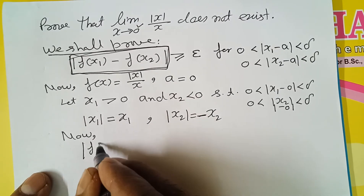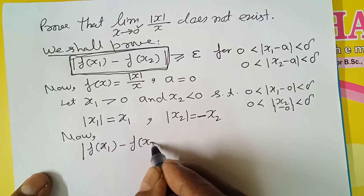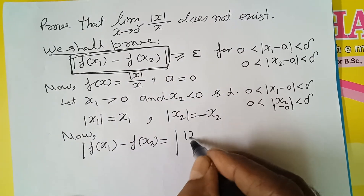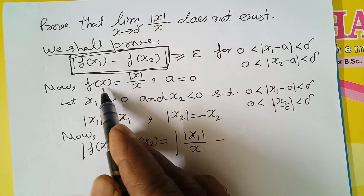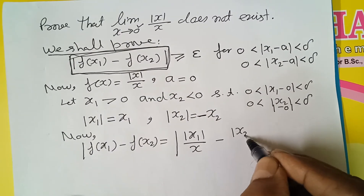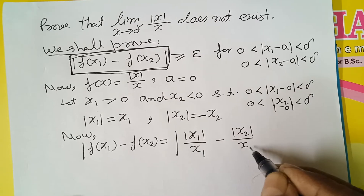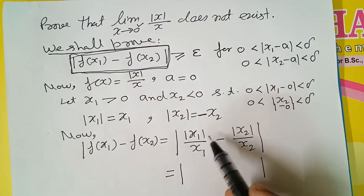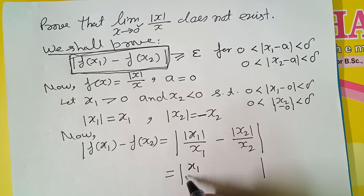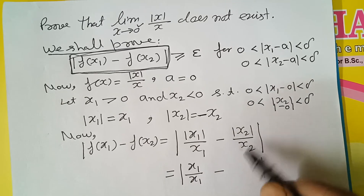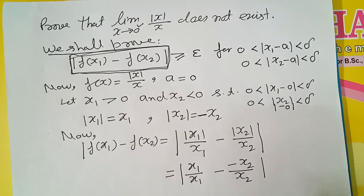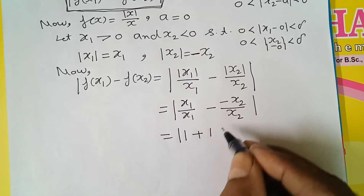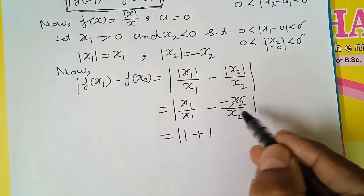So start with f(x1) minus f(x2). f of x1 को observe करें — ये mod x1 by x1 हो गया। और f of x2 को observe करें — ये mod x2 by x2 हो गया। mod x1 की value plus x1 है, upon x1; और mod x2 की value minus x2, divided by x2। x1 and x1 cancel, x2 and x2 cancel।